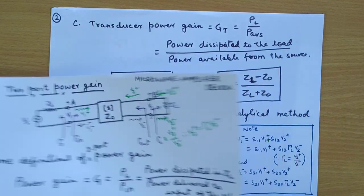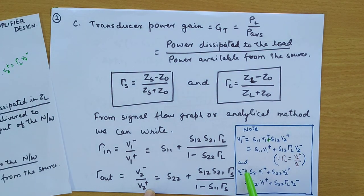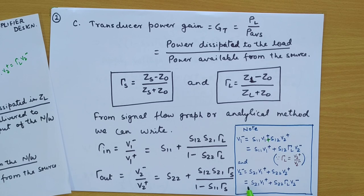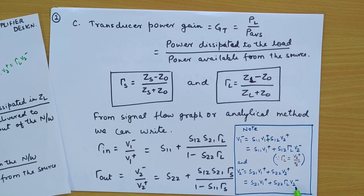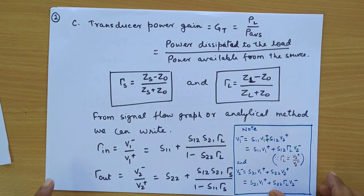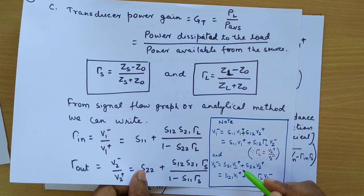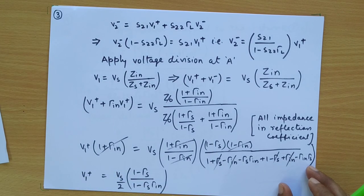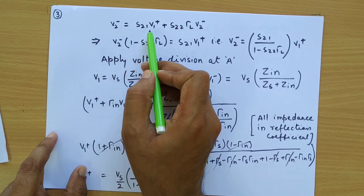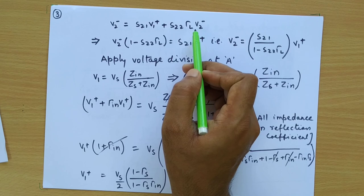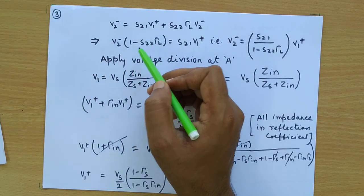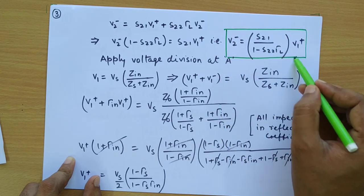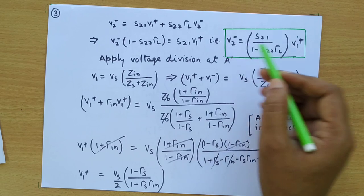This substitution has been applied. Also, V2 minus from the S-parameter definition is V2 minus equals S21·V1 plus plus S22·V2 plus, which becomes S21·V1 plus plus S22·gamma_L·V2 minus. By taking this equation, we can further simplify and find a relation between V1 plus and V2 minus. So this relation gives us V2 minus equals S21·V1 plus divided by (1 minus S22·gamma_L). That means if we know V1 plus, we can write V2 minus from this expression.